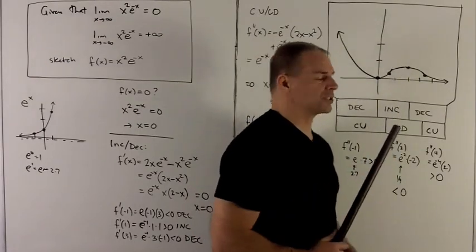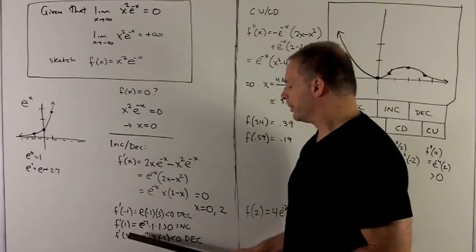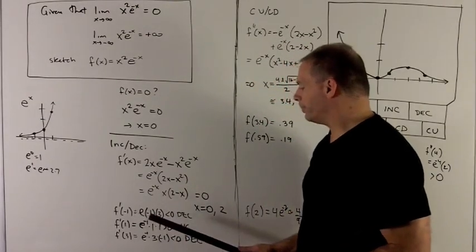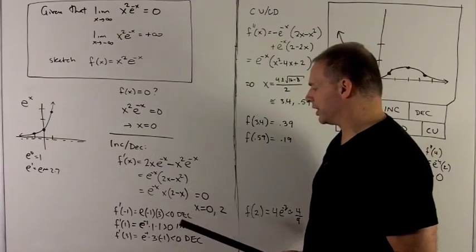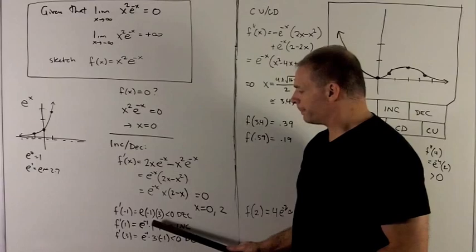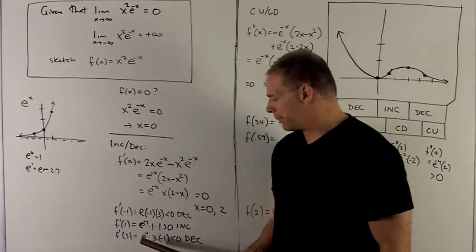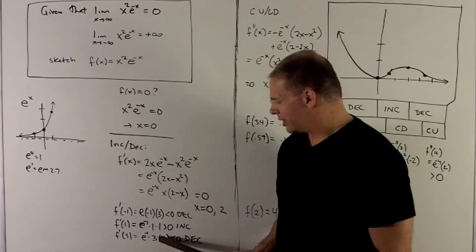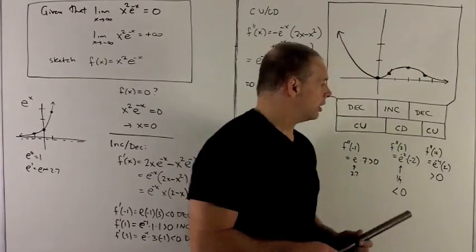For increasing and decreasing, we check a point in each region marked off by x = 0 and x = 2. f'(-1) gives roughly -3e ≈ -9, which is negative, so decreasing on (-∞, 0). f'(1) gives e^(-1) ≈ 1/3, which is positive, so increasing on (0, 2). f'(3) gives roughly e^(-3)·(3)(−1) ≈ -1/9, which is negative, so decreasing on (2, ∞).